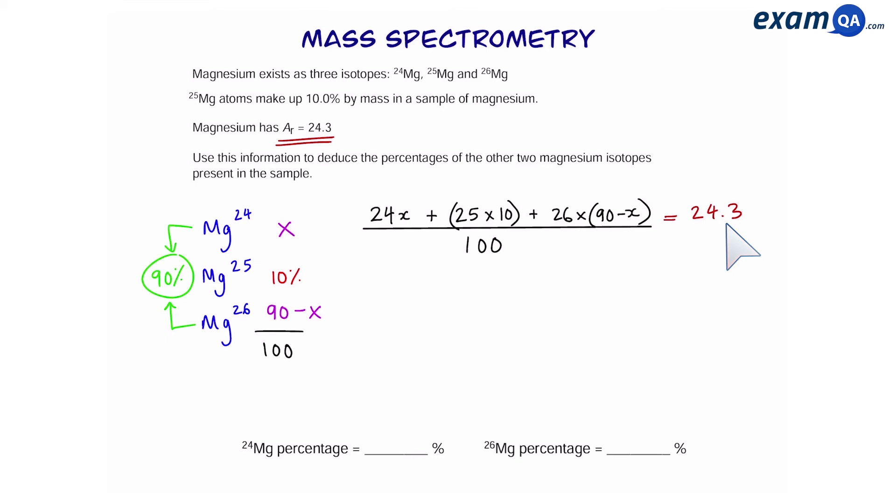Now we're going to work towards making x the subject. First, times 24.3 by 100 and open up this bracket. So now our equation should look like this. Now we can collect the like terms to make x the subject and we should be left with something like this. One final step and divide by 2. The minuses cancel out on both sides and that leaves us with x equals 80.